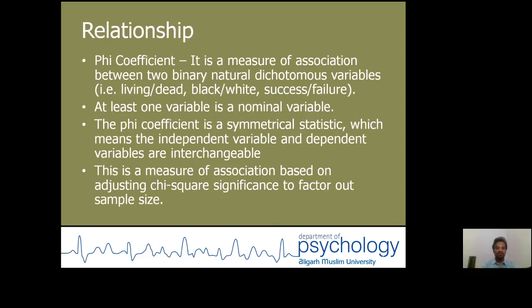Phi coefficient is a measure of association between two binary natural dichotomous variables. For example, living/dead, black/white, success/failure, etc.